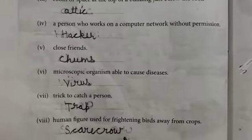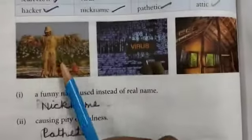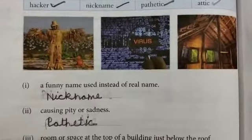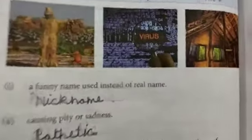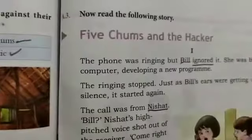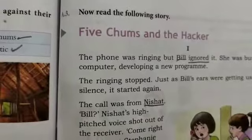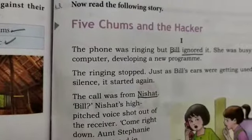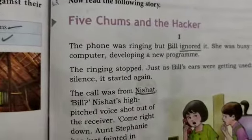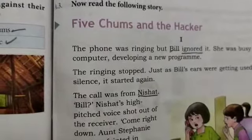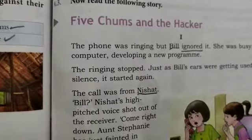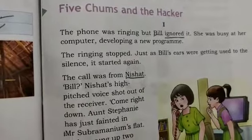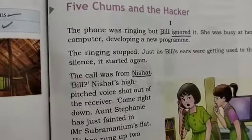A human figure used for frightening birds away from crops — that is known as 'scarecrow.' Now Exercise A3: read the story. You will read the story 'Five Chums and the Hacker,' which has already been explained. Read it one time.